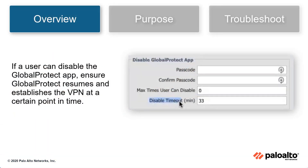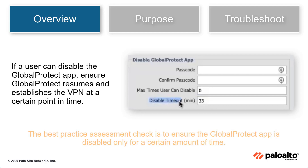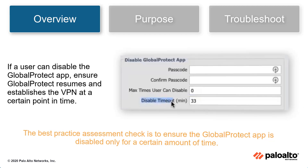If a user is able to disable the GlobalProtect app, ensure the GlobalProtect resumes and establishes the VPN at a certain point in time. The Disable GlobalProtect App Timeout best practice check ensures that the GlobalProtect app is disabled only for a certain amount of time.